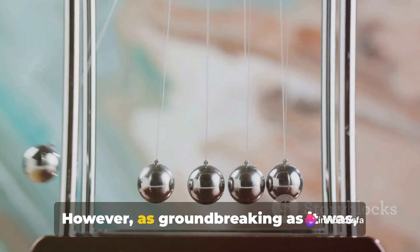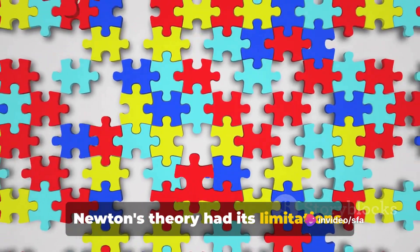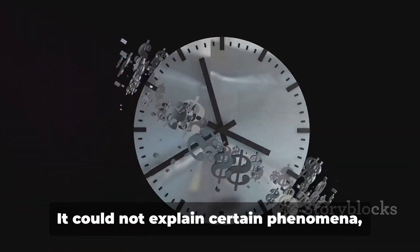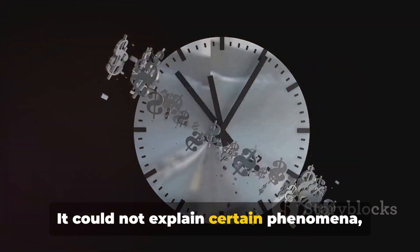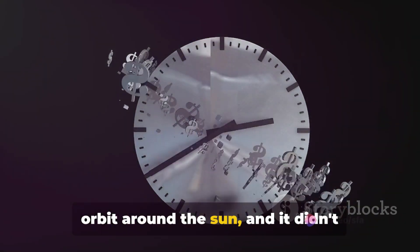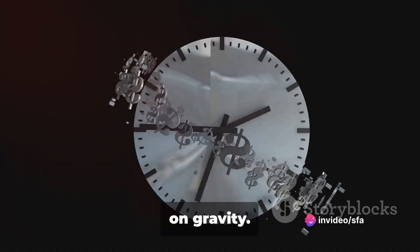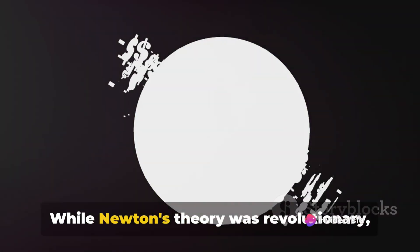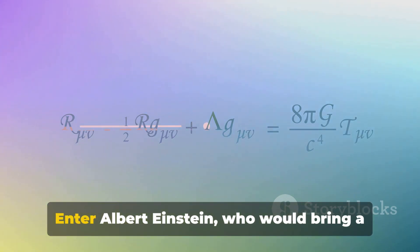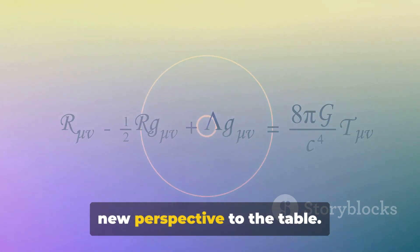However, as groundbreaking as it was, Newton's theory had its limitations. It was a brilliant piece of the puzzle, but it wasn't the entire picture. It could not explain certain phenomena like the slight discrepancy in Mercury's orbit around the sun, and it didn't account for the effects of time and space on gravity. While Newton's theory was revolutionary, it didn't answer all the questions. Enter Albert Einstein, who would bring a new perspective to the table.